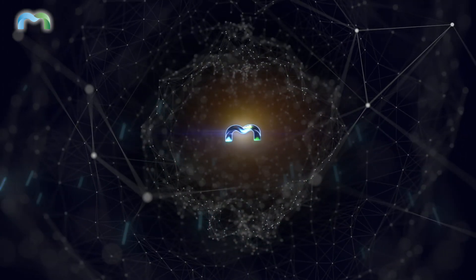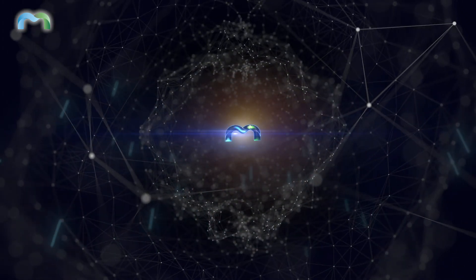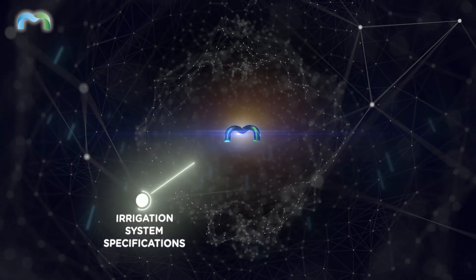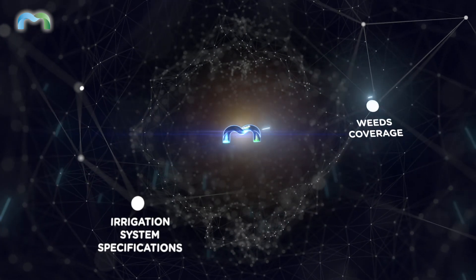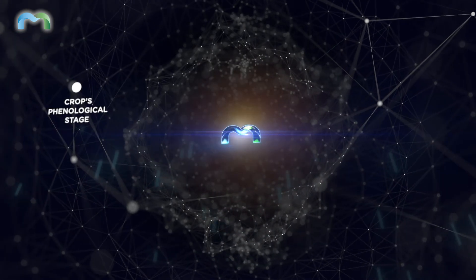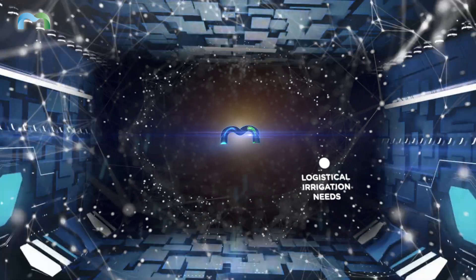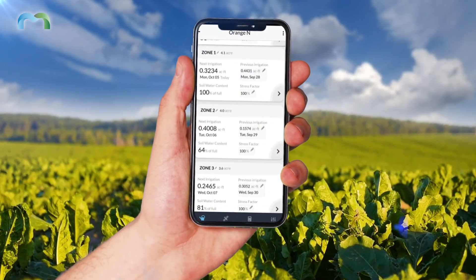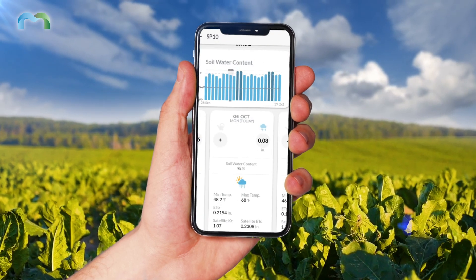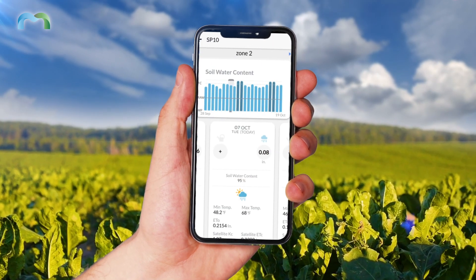But that's not enough for accurate scheduling. In addition, MANA's proprietary algorithm also considers irrigation system specifications, weeds coverage, the crop's phenological stage, and your logistical irrigation needs to provide ideal, pinpoint recommendations today and for the next 14 days for optimal irrigation scheduling.